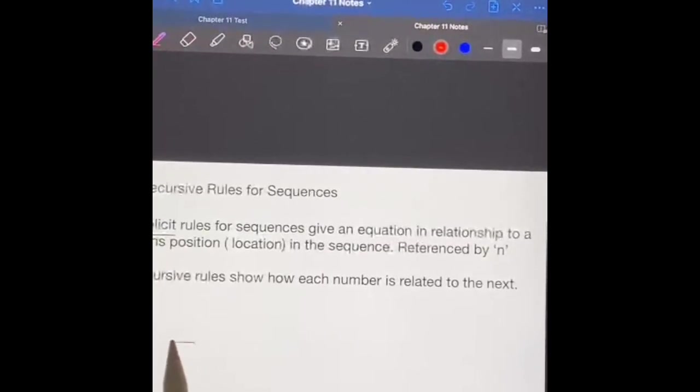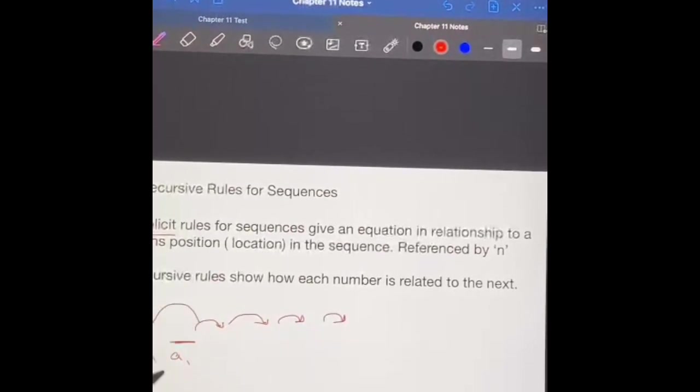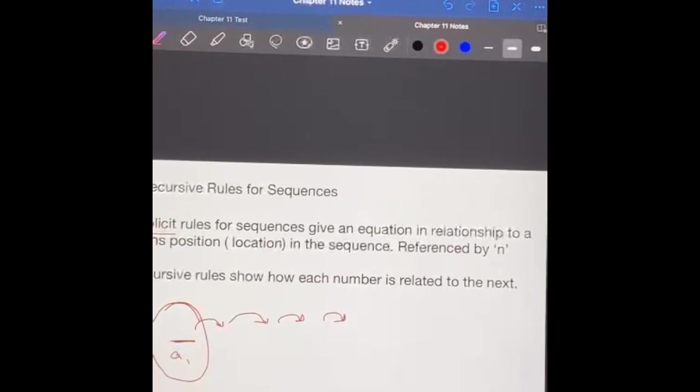Explicit rules, like we said, always start at our first term and they tell us how to get to any term from there, but our marker is that first term.